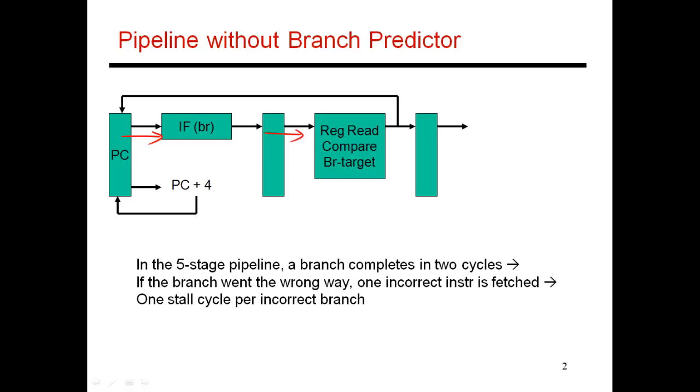But by default, my pipeline assumes that I'm going to bring in the next sequential instruction. That is, I make the assumption that the branch will not jump anywhere. The branch will not be taken. And so I go ahead and start to fetch PC plus 4, the instruction at the next location.